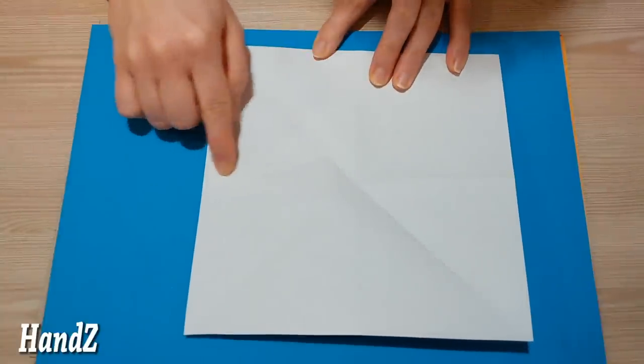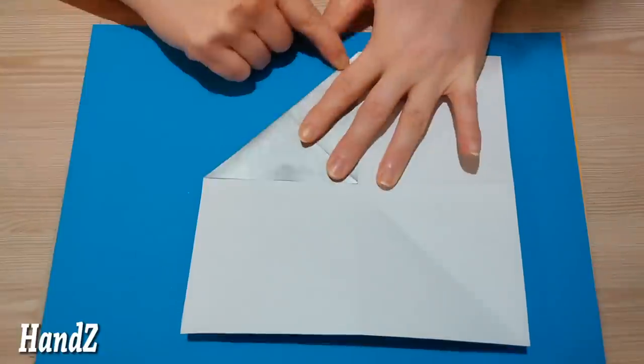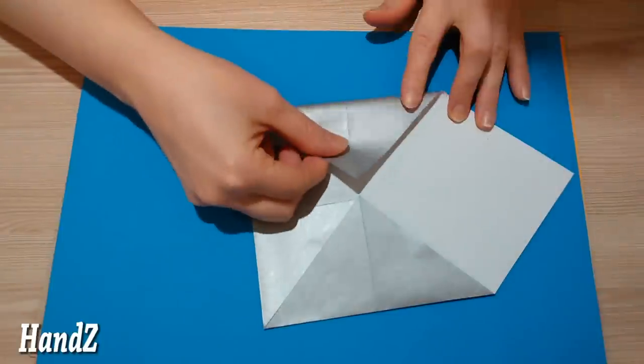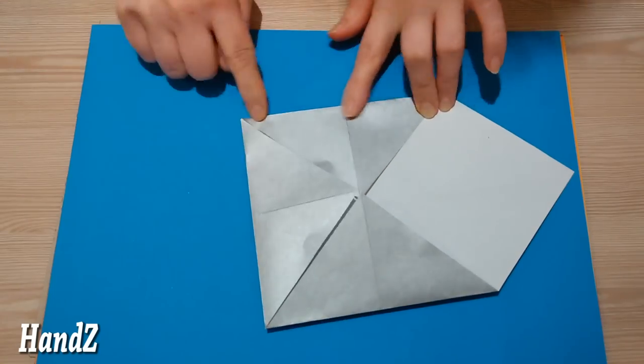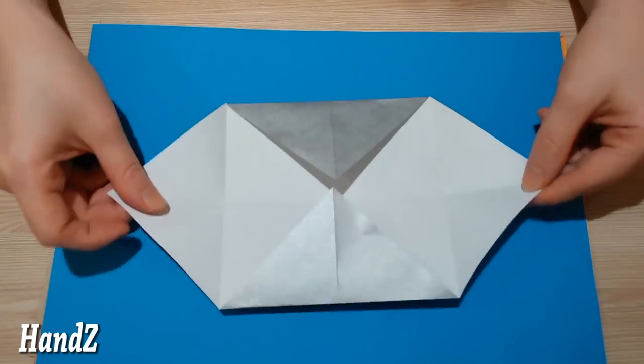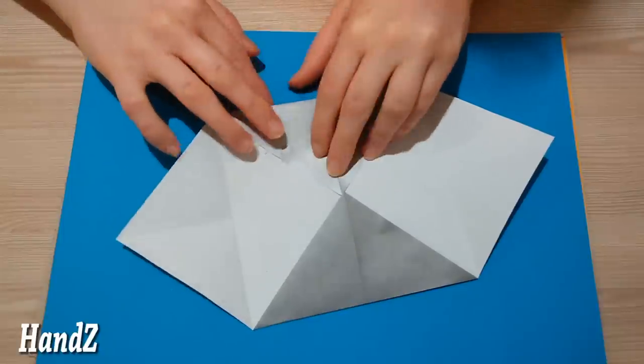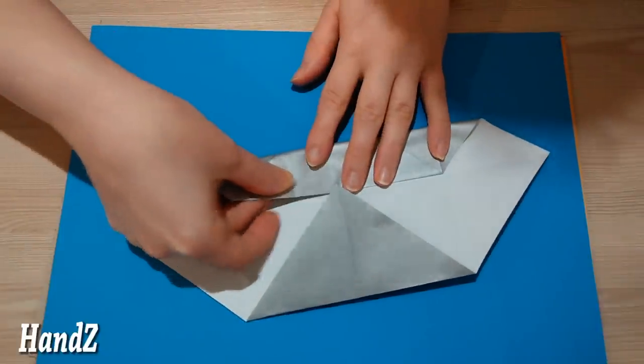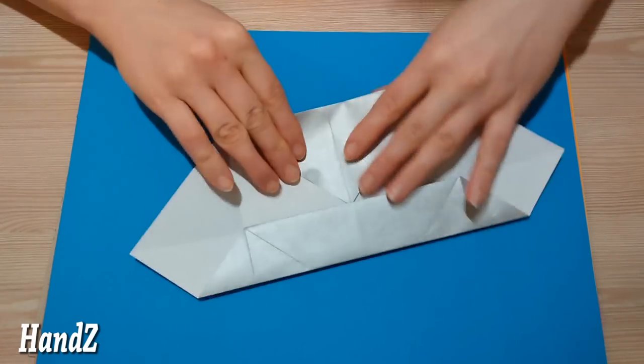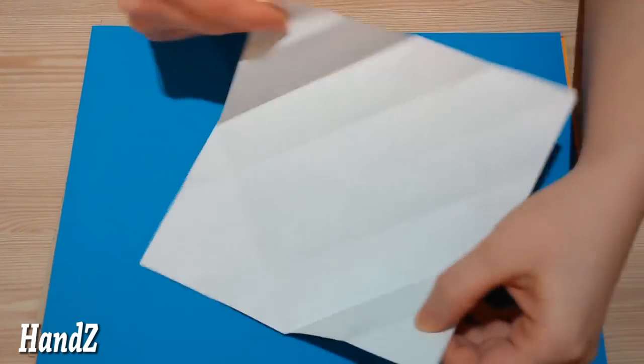Now, bring all corners to the center of the square. Open the two opposite corners and now we need to fold this part in half. And do the same with the opposite side. Open it and repeat the folds with the next two corners.